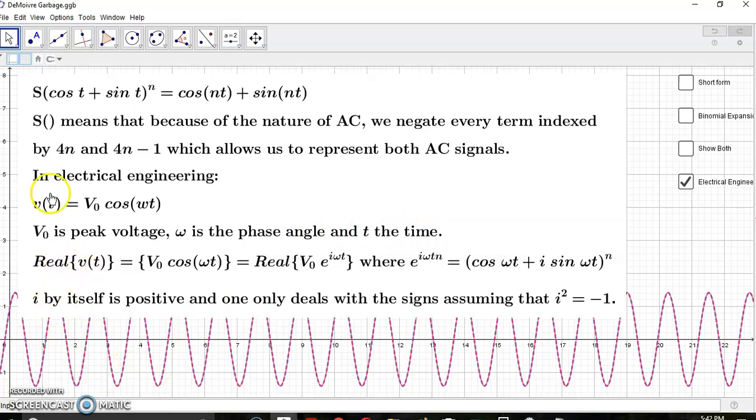And so if we take the real part of this expression here, because we know that e to the i omega t is supposed to equal to this, right, and so if we just take the real part, we'll have the sum of the binomial coefficients that we're interested in. So we're representing the peak voltage and the impedance. And by the way, I'm not an electrical engineer, I'm just explaining to you how they reason around this and why it's garbage. So i by itself is considered to be positive, and one only deals with the signs assuming that i squared is equal to minus one.